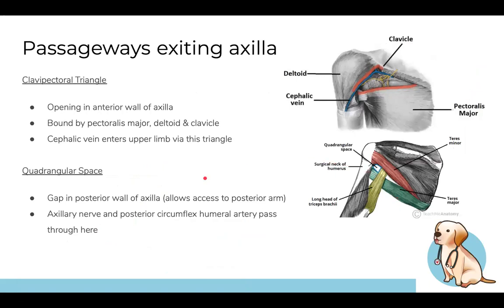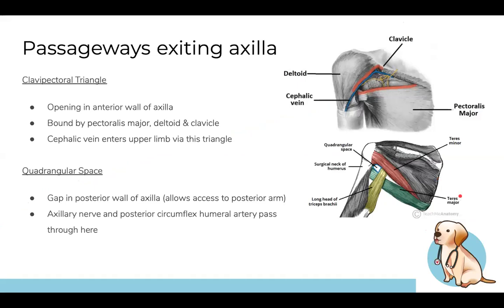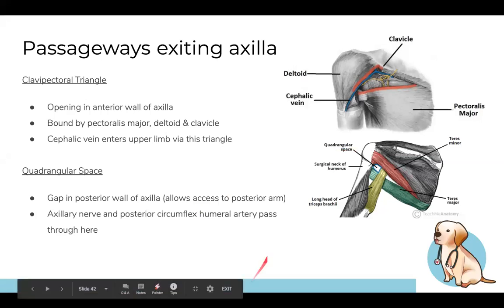The clavipectoral triangle is the triangle where the cephalic vein enters the upper limb. The quadrangular space is a small rectangular area where the axillary nerve and posterior circumflex humeral artery pass through. Clinically, consider what damage to these areas would do to the local neurovasculature. For the quadrangular space, there's a hand position trick — arranging fingers to show how the surrounding muscles are oriented — which is the key examinable point.